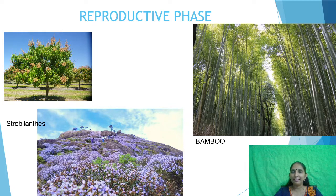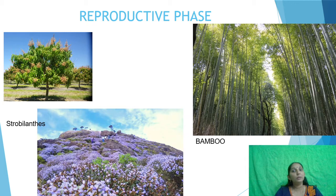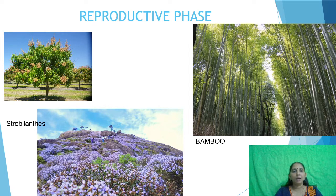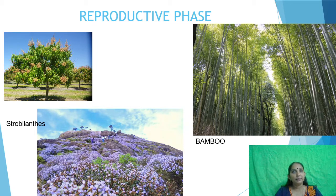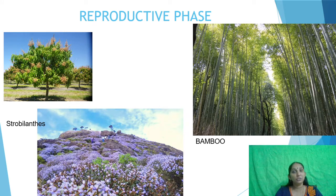Strobilanthus flowers once every 12 years. This plant is called strobilanthus, and it flowers on a 12-year cycle. So the reproductive phase and its time period may differ in different species.